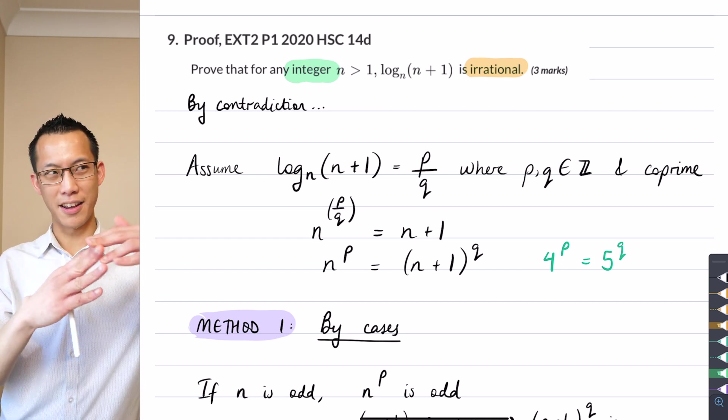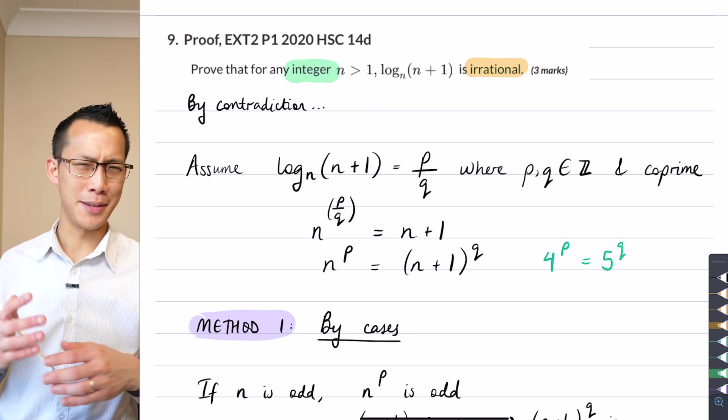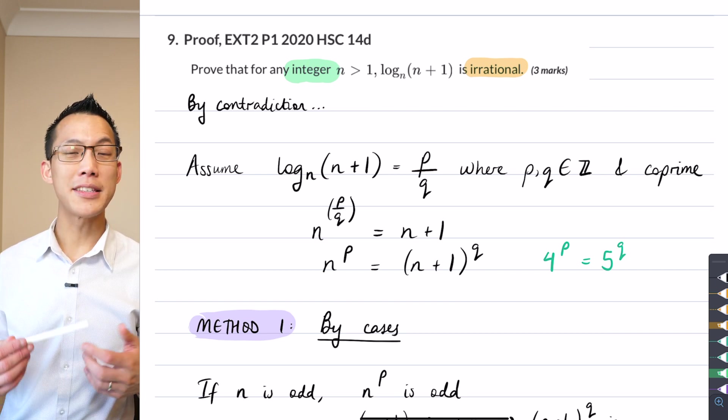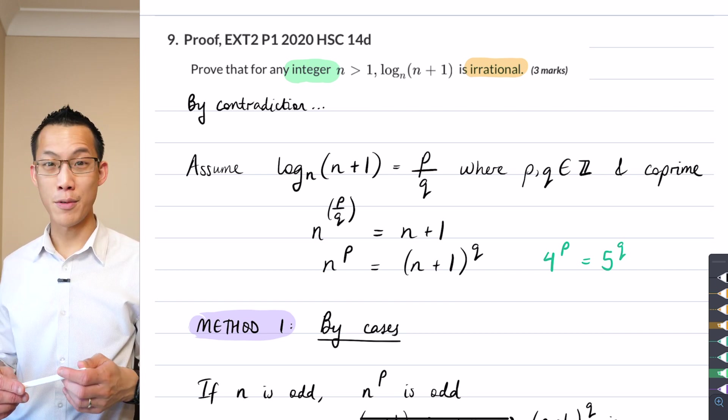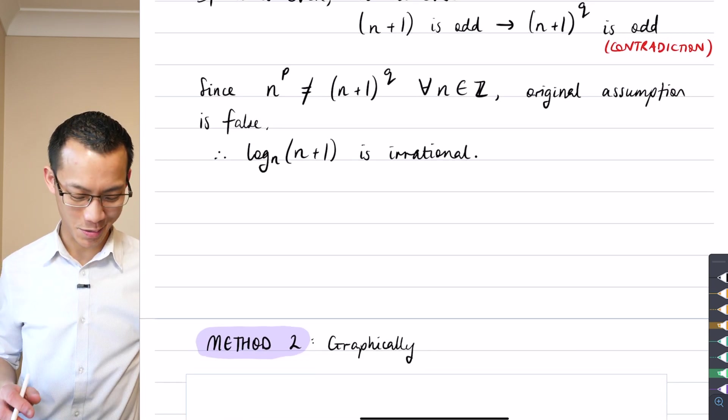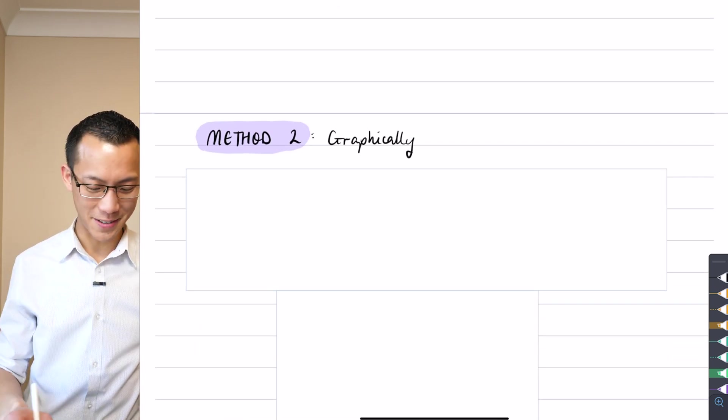If we're proving something true for all real values, it's definitely going to be true for all integer values because the integers are a subset of the real values. So that's all a bit vague, let me explain what I mean.